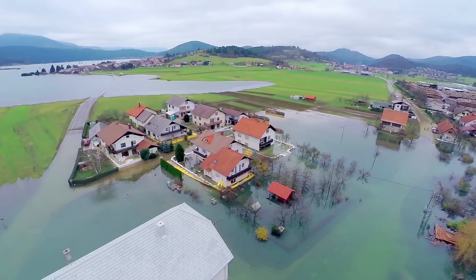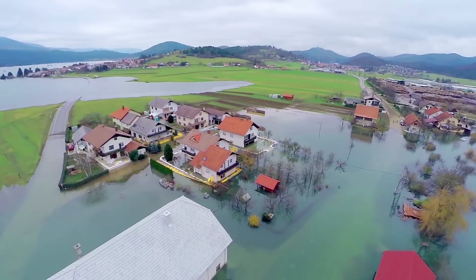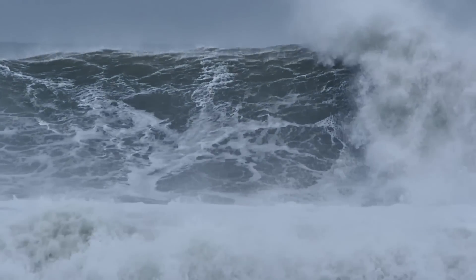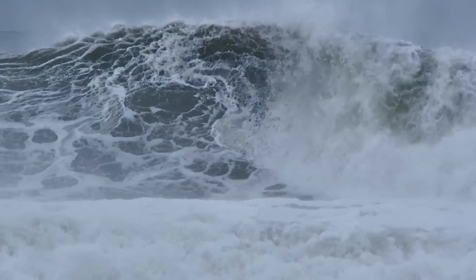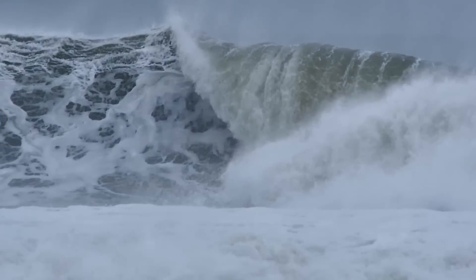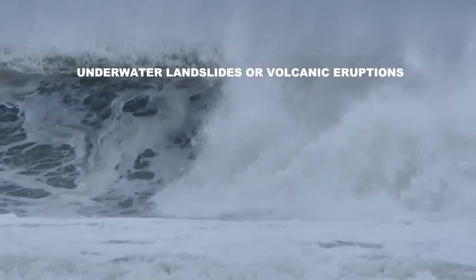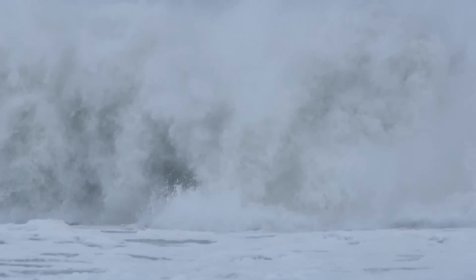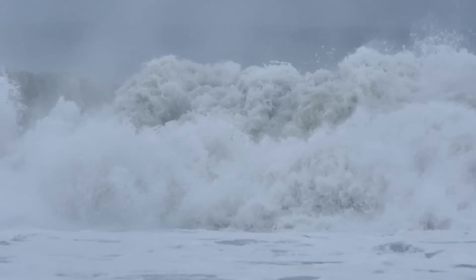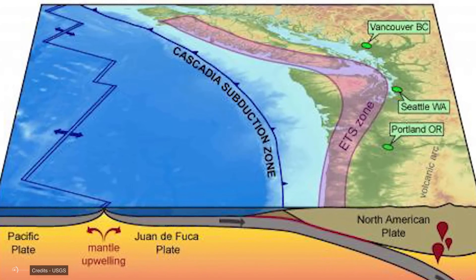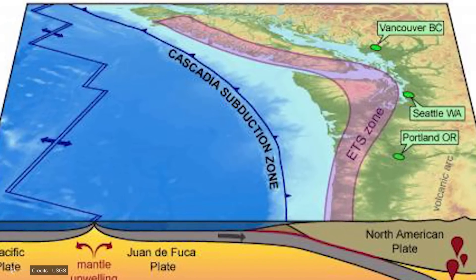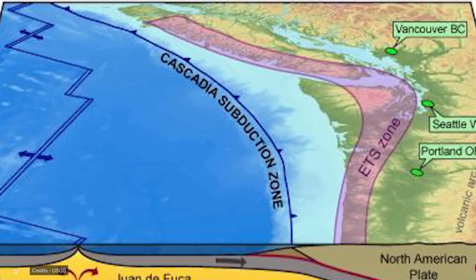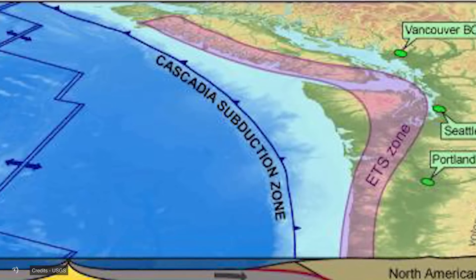Now, let's explain why earthquakes in this region generate massive tsunamis and what areas should we look out for. Tsunamis are catastrophic ocean waves that can cause immense destruction when they make landfall. While they can be triggered by various geological events like underwater landslides or volcanic eruptions, some of the most devastating tsunamis are generated by large megathrust earthquakes along subduction zones. The Cascadia subduction zone off the Pacific Northwest coast of North America is one such region that has a history of generating powerful tsunamis.